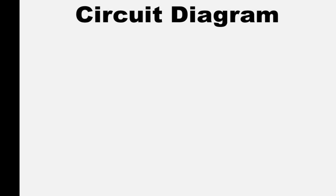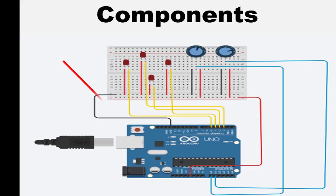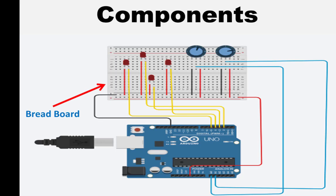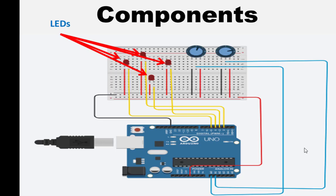This is the circuit diagram we will be using. The first component is the Arduino UNO itself — we'll be doing this on Tinkercad. The second component is the breadboard, then we have wipers which are variable resistors: one wiper is for the x-axis, the other for the y-axis. We also have LEDs which will indicate direction — four LEDs for up, down, right, and left.